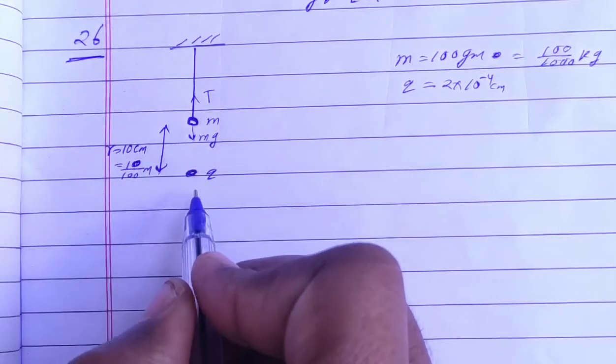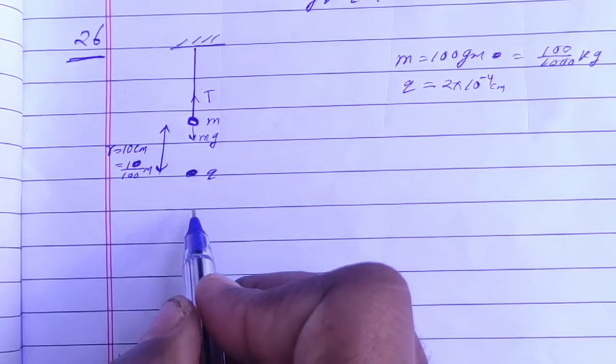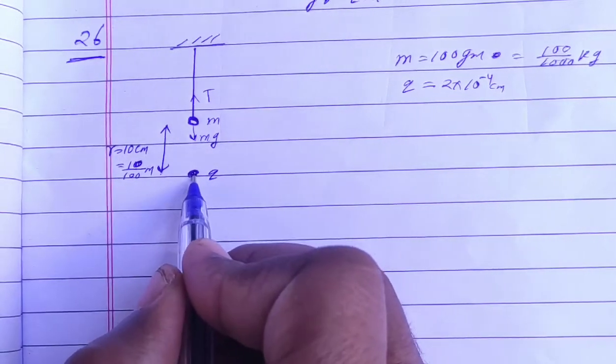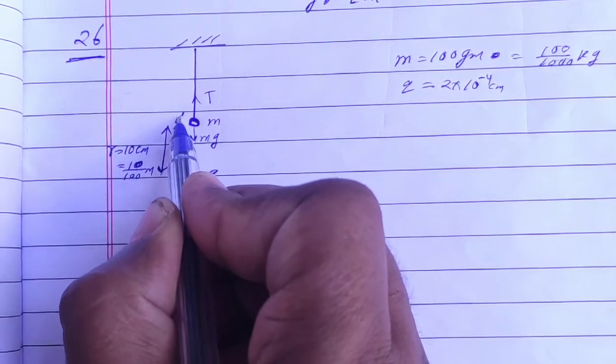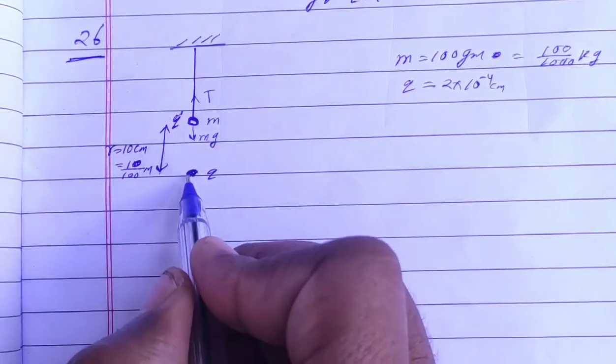Tension T is equal to mg if we don't consider the charge. But if we consider charge q here, then we need to account for the electrostatic force as well.